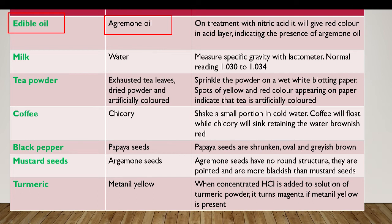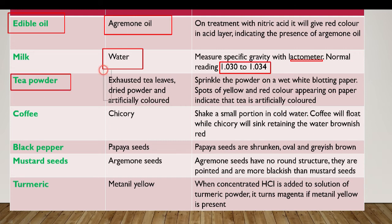Addition of argemone oil in edible oil can be detected by treatment with nitric acid — it will give a red color in the acid layer, indicating the presence of argemone oil. Milk is usually adulterated with water, which can be tested by measuring specific gravity with a lactometer. The normal reading is in the range of 1.030 to 1.034.